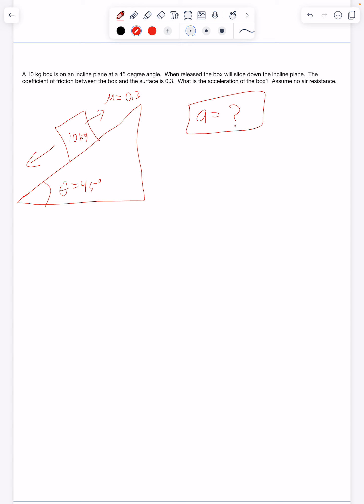Okay. So right away, if I see I'm trying to find the acceleration of the box, I know I'm going to use this equation. I know I'm solving for A. I have the mass already. That is 10. But I need to add forces.